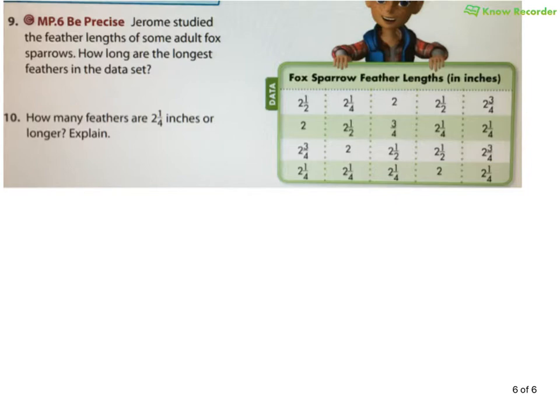All right. Jerome studied the feather lengths of some adult fox sparrows. A fox and a sparrow. Hmm. Interesting. Very interesting to me. Is it a fox that flies? Is it a sparrow? Is it a bird that walks? Quite interesting. I love what they choose to put in these books. How long are the longest feathers in the data set? So, here, all I'm doing is looking for the greatest value. Two and a half. Right? Let's start there. Two and a half. See if I can find something greater. Oh, here's two and three quarters. Two and three quarters. Let's look. We're not done. Might be larger. Two and three quarters. Two and a half. That is the largest value. So, it's two and three quarters inches.